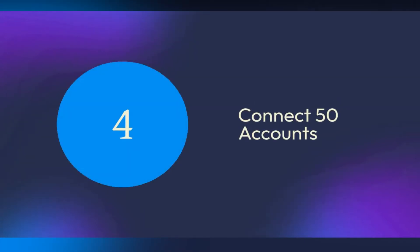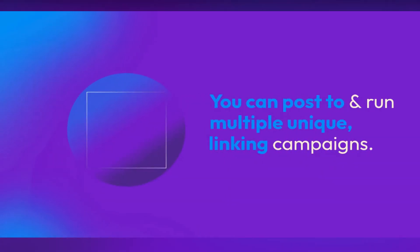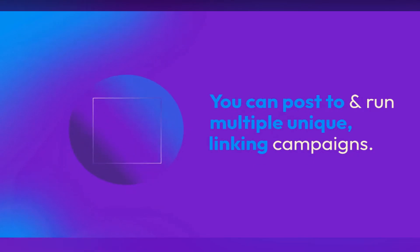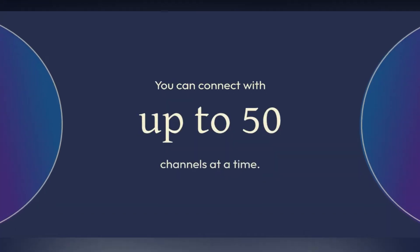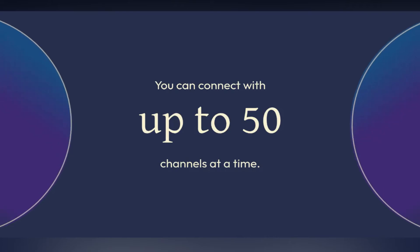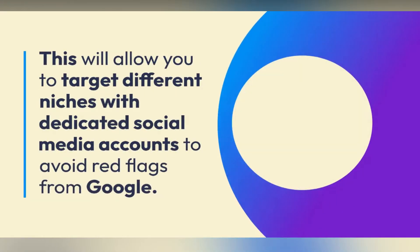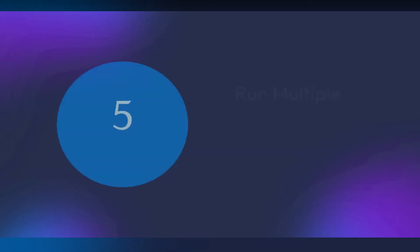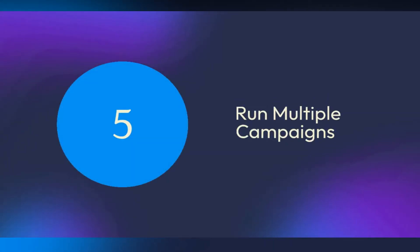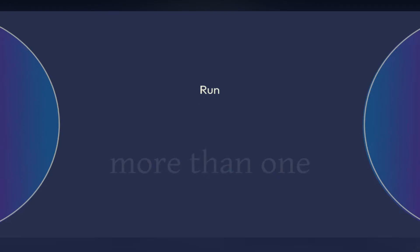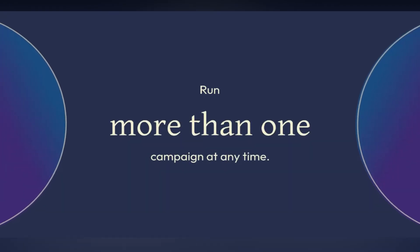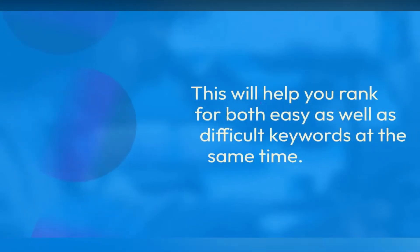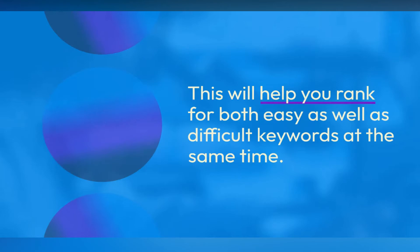Feature 4: Connect 50 Accounts. You can post to and run multiple unique linking campaigns, connecting with up to 50 channels at a time. This allows you to target different niches with dedicated social media accounts to avoid red flags from Google. Feature 5: Run Multiple Campaigns. Run more than one campaign at any time, which helps you rank for both easy and difficult keywords simultaneously.